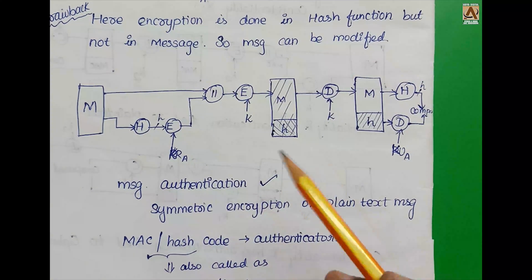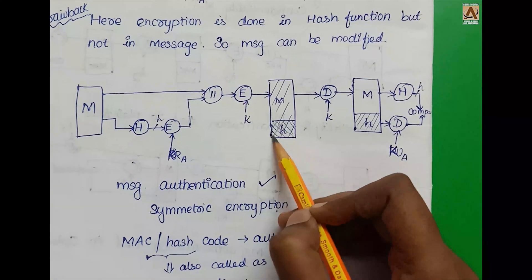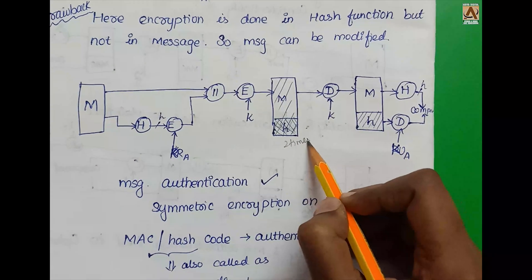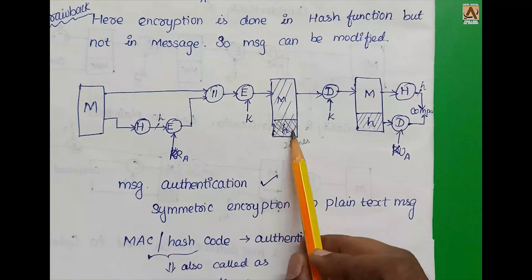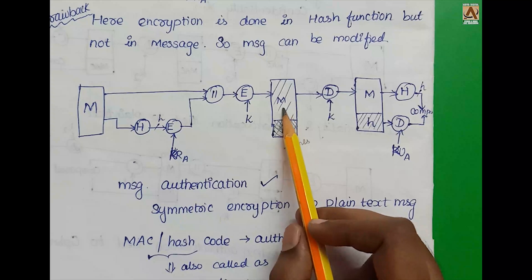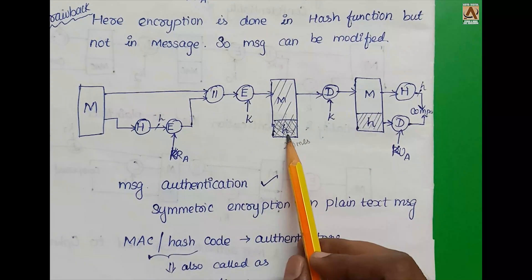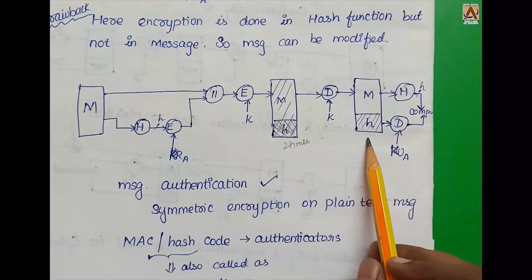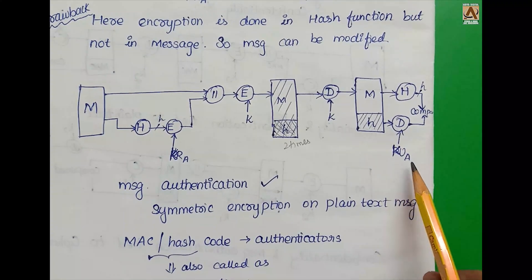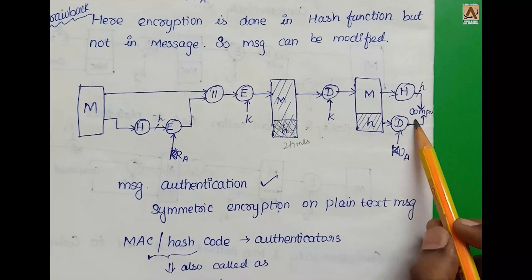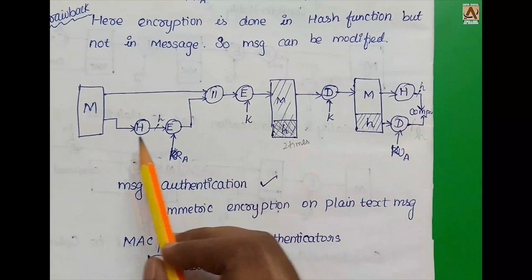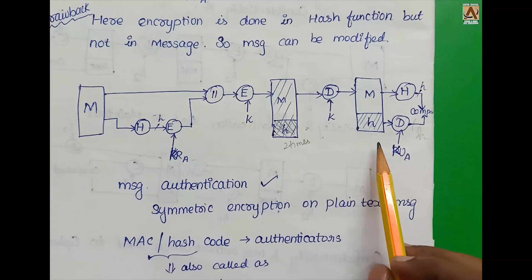The hash function output is encrypted once. The receiver decrypts the hash value using the public key of User A to retrieve the hash code, and separately decrypts the message. The hash function is then applied to the decrypted message and compared with the decrypted hash code to verify authenticity.